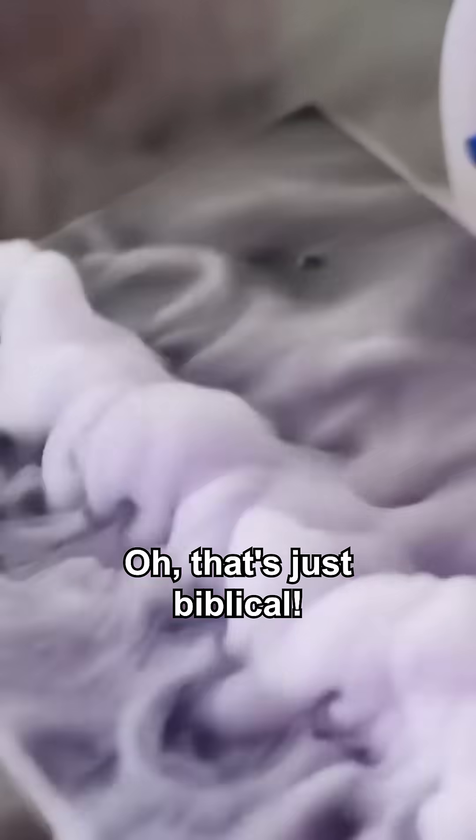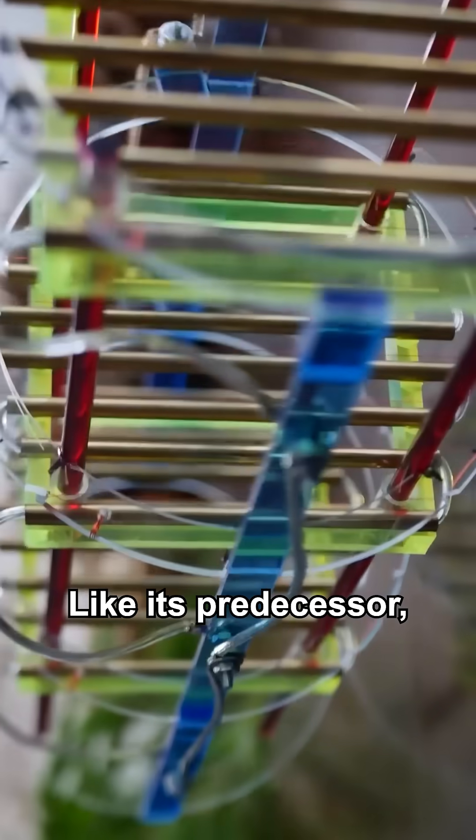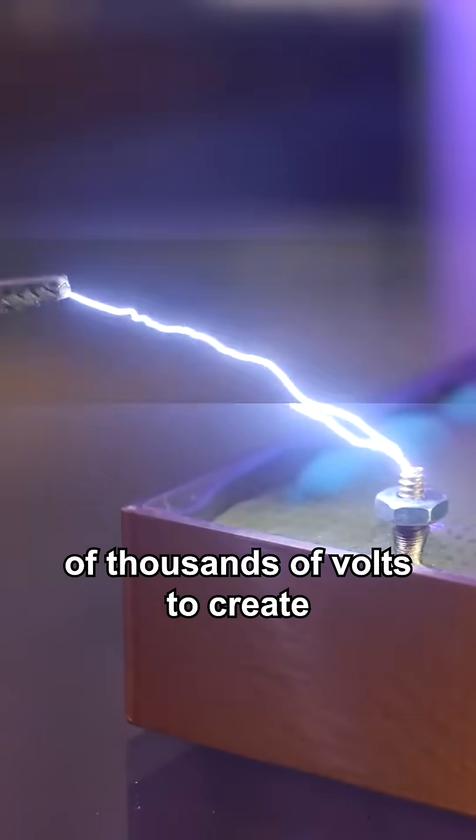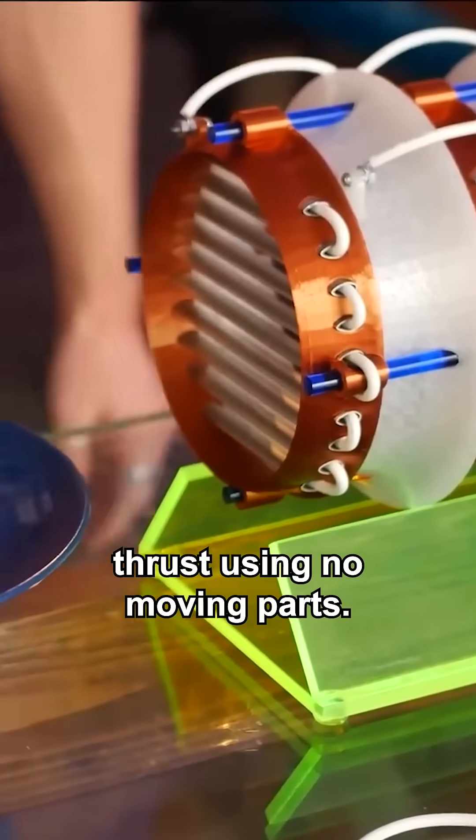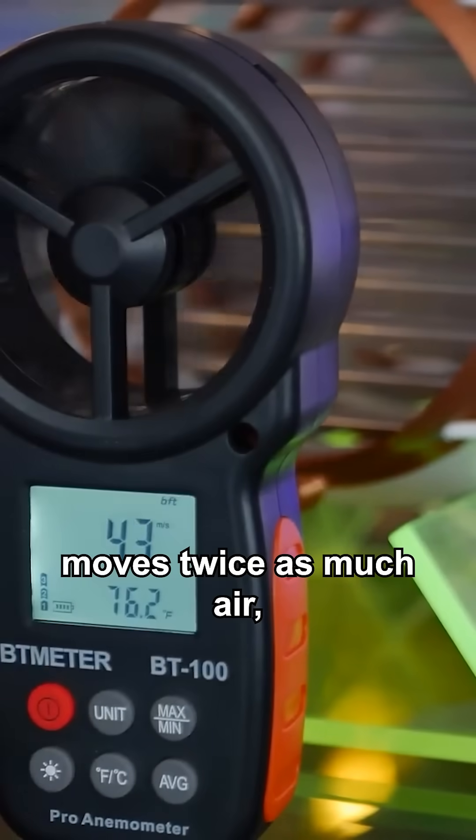This is the BSI 2 thruster. Like its predecessor, it relies on tens of thousands of volts to create thrust using no moving parts. It's half the size and moves twice as much air.